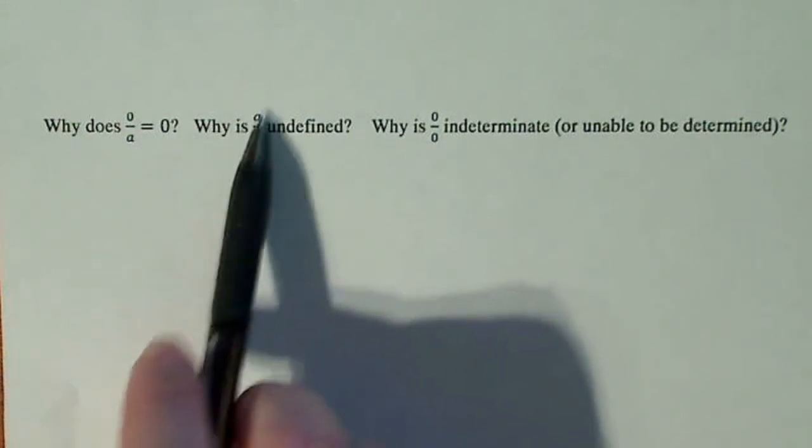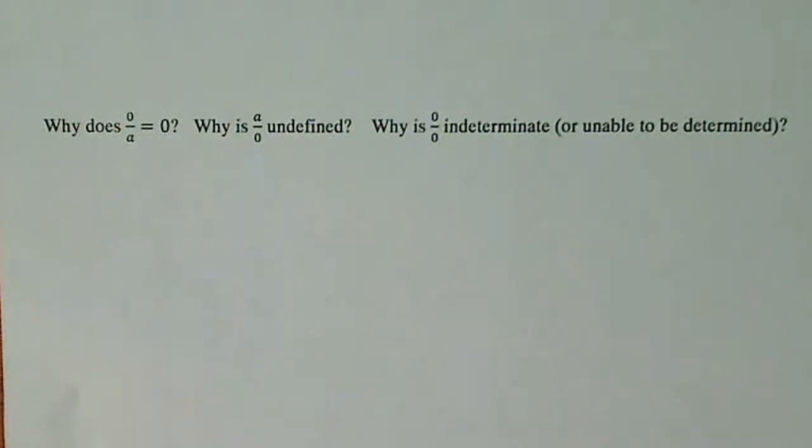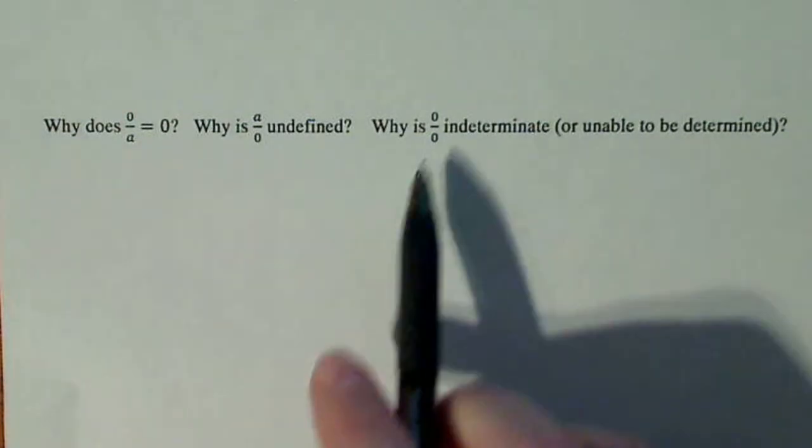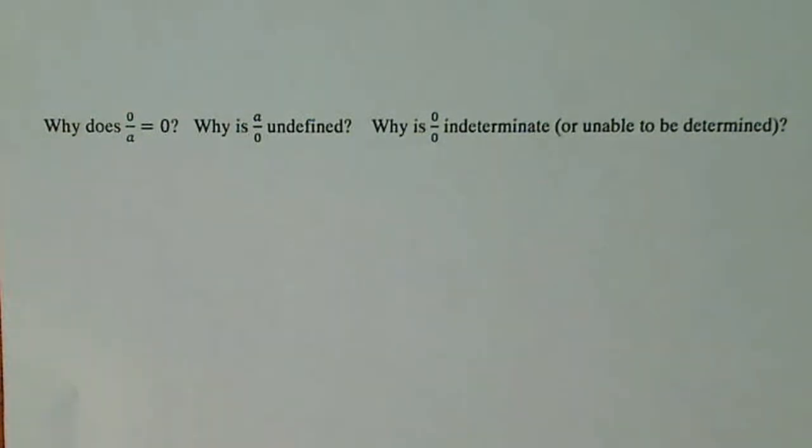A, any real number over 0, is undefined. And 0 over 0, although we want to think it's 1, it's actually what we call indeterminate, or we are unable to determine the number that it represents.